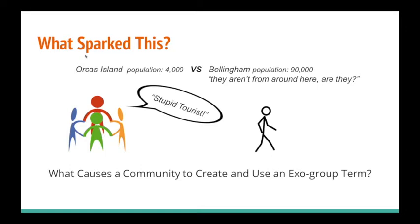It should be noticed that we don't always insult people all the time, but a lot of times if we use the word 'tourist,' we are insulting them, while the word 'visitor' is more of a polite term when talking about an outsider. These terms are called exoGroup terms or outgroup terms. This difference between these communities caused me to be curious: what causes a community to create and use an exoGroup term?